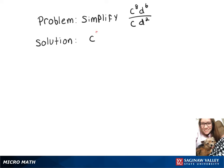So we'll do c to the 8 minus 1 times d to the 6 minus 2. And our final answer here is going to be c to the 7 times d to the 4.